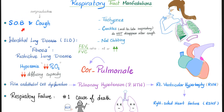Respiratory manifestations include shortness of breath and non-productive cough. Interstitial lung disease — specifically bilateral lung fibrosis — causes restrictive lung disease, hypoxemia, and decreased diffusing capacity. On auscultation: inspiratory, mid-to-late crackles that do not disappear with cough, because you cannot cough up fibrosis. Nail clubbing can occur in some patients. The right heart must pump blood against this thick, stiff lung, raising pulmonary artery pressure — pulmonary hypertension. The right ventricle hypertrophies to counteract the high pressure, eventually causing right-sided heart failure. When a lung problem causes a right heart problem, that is cor pulmonale.